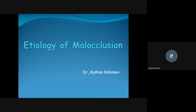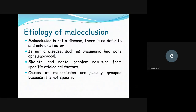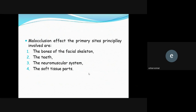Hi students. In the last two lectures we talked about malocclusion. In these next two lectures we will talk about the etiology of malocclusion. Malocclusion is not a disease — there is no definite single factor. It is multifactorial: a skeletal and dental problem resulting from specific etiological factors. Causes of malocclusion are usually grouped because there is no one specific problem that causes it.